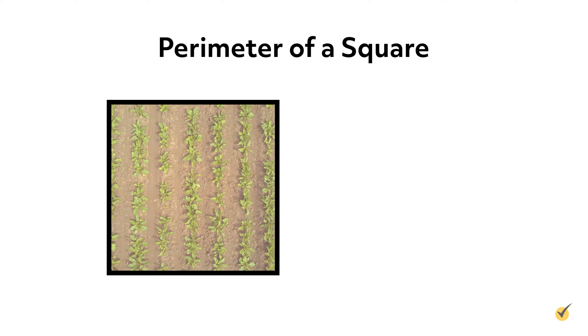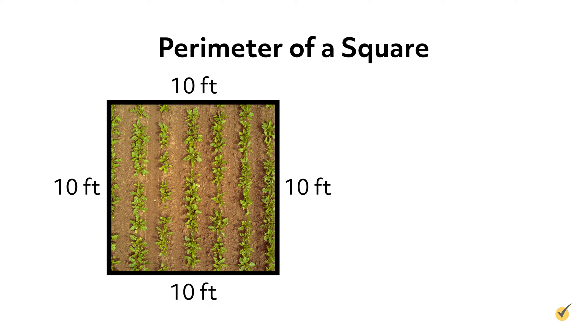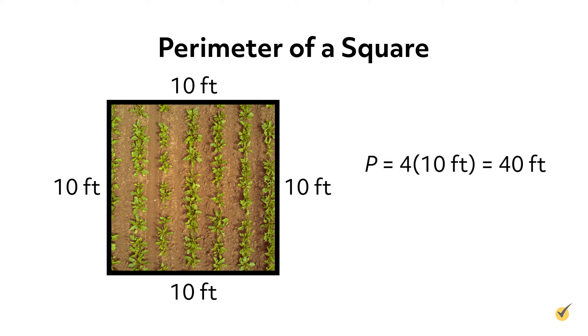For example, suppose you have a small square garden plot 10 feet on each side. Then its perimeter is 4 times the side length of 10 feet, namely 40 feet. So you would need 40 feet of fencing to build a fence around the garden. Note that perimeter is a distance, so we measure it in simple distance units like feet, inches, meters, or kilometers.